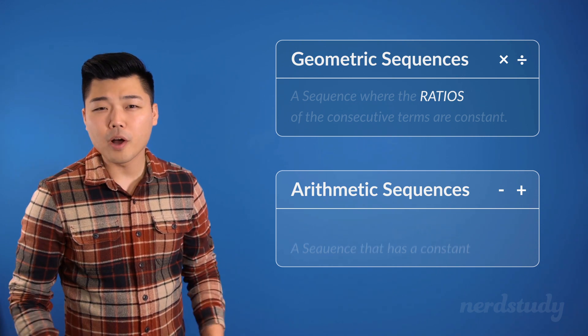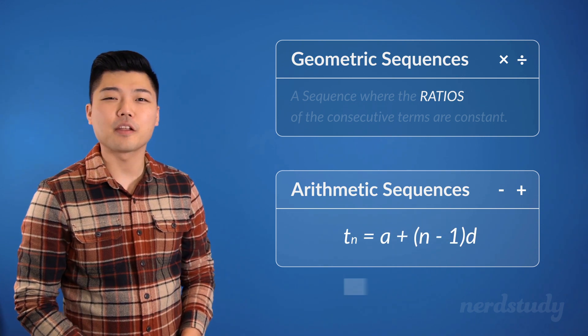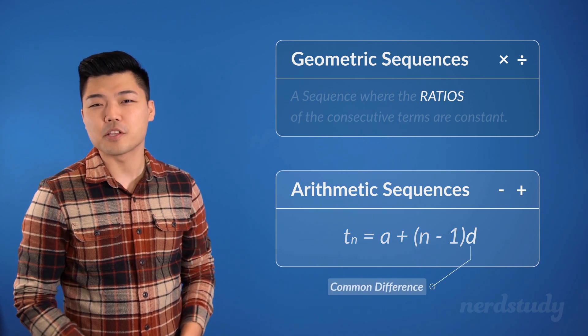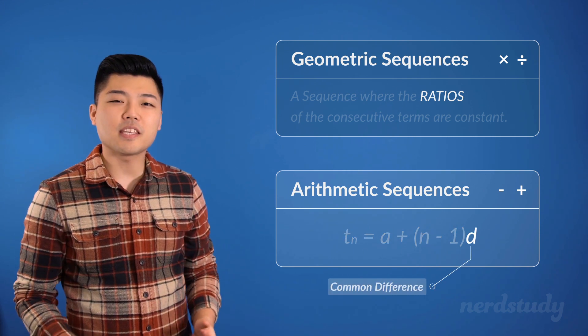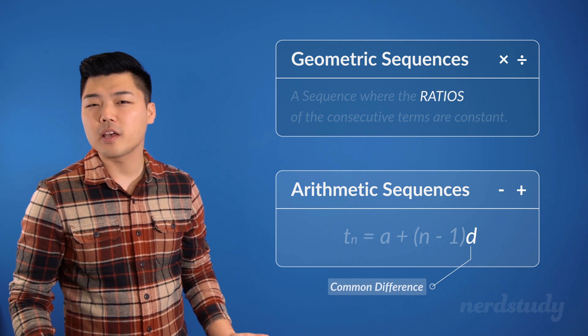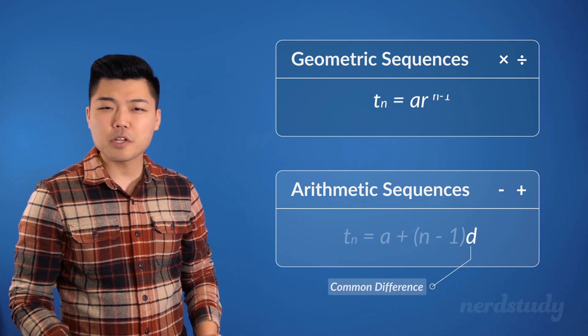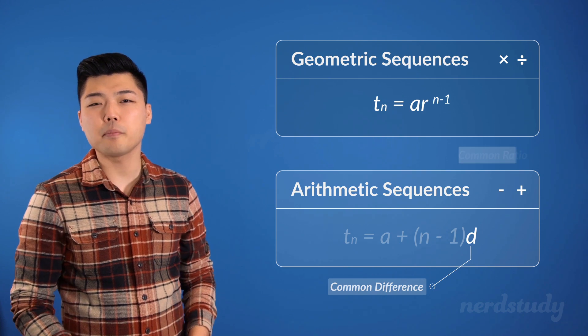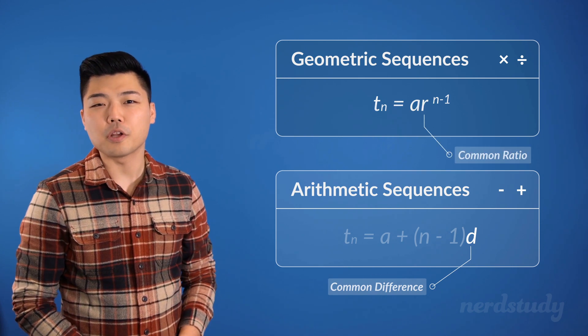While arithmetic sequences had common differences as denoted by d as a key aspect that decided the difference between one term and another, a geometric sequence has a common ratio, as denoted by an r.